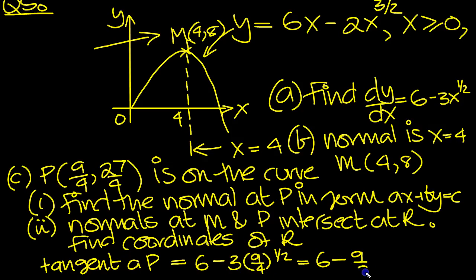3 over 2 times 3 is 9 over 2. So you've got 12 over 2 here, minus 9 over 2 is simply 3 over 2. So that's the tangent, the gradient of the tangent.